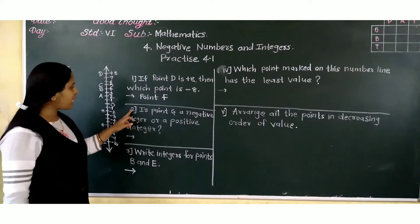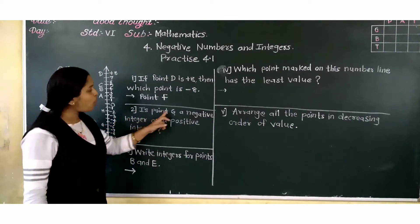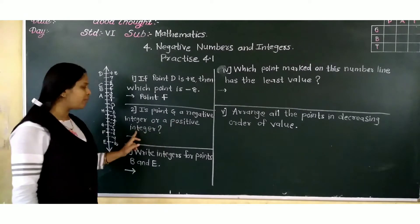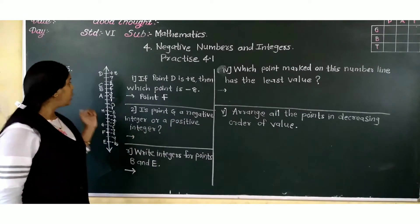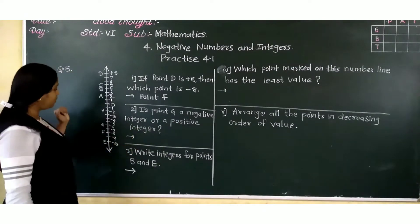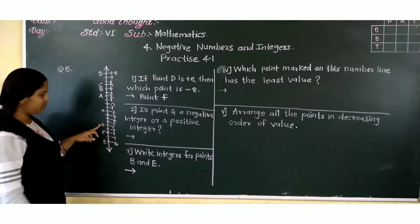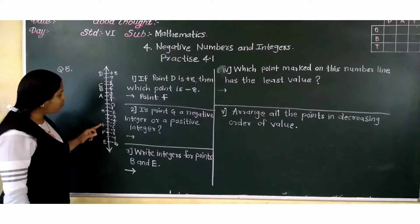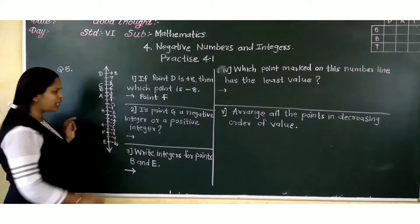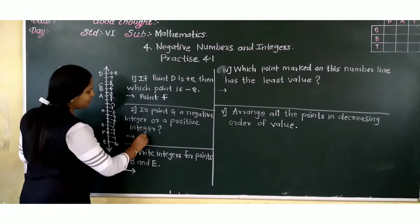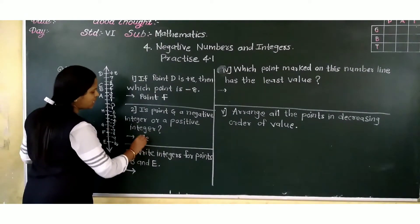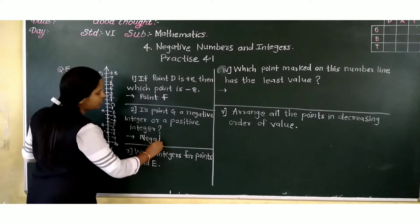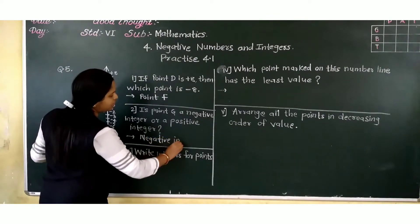Second: is point G a negative integer or a positive integer? Now where is G? G is here. So is it positive or negative? Negative. So the answer will be: negative integer.